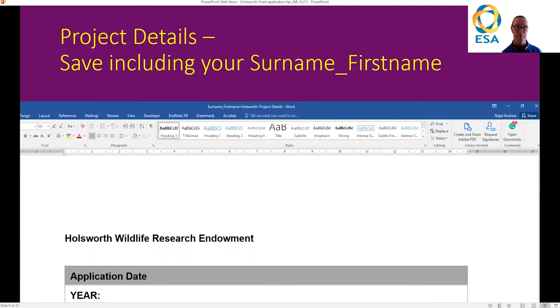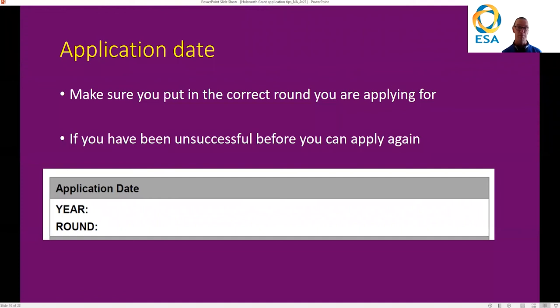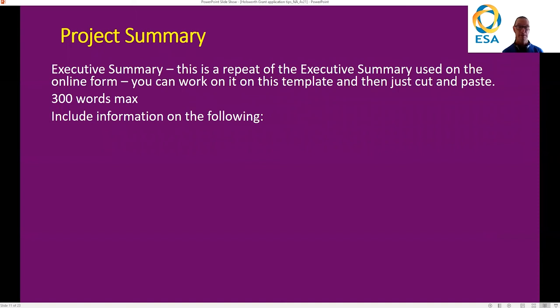In terms of the application itself, particularly the project details, when you open up the Word document, put in the year and the round, because sometimes if people have previously applied and missed out, you can reapply again, but you've got to make sure the specific year and round is identified, just to make sure we're not doubling up on applications. The project summary is called an executive summary. It's a repeat of the executive summary used on the online form, but it's easier to work in a Word document where you can format a bit more and then just cut and paste into the online form.